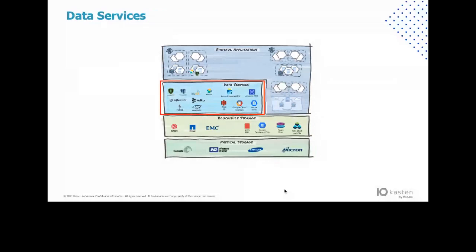For data services, when we think about databases, we think about NoSQL, SQL, but we also have to think about messaging queues and batch processing workloads that require stateful data we have to consider and protect. We start looking at how to protect that data specifically for that particular data service — whether it be MongoDB, MySQL, or others. The data service doesn't necessarily have to run within the Kubernetes cluster itself; it can be an external data service such as Amazon RDS. But we still have to protect that workload and understand what the application using that data looks like.